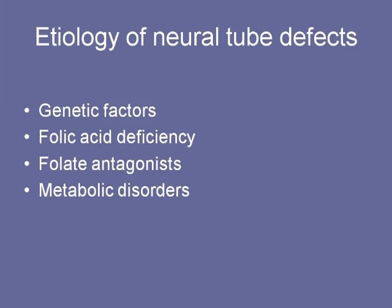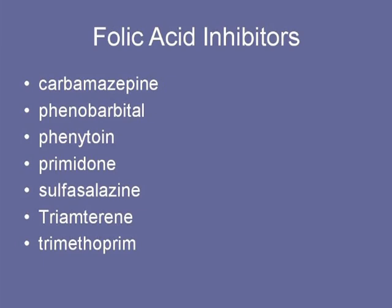What causes neural tube defects? Genetic factors — in monozygotic twins there's a high concordance rate. Folic acid deficiency in very early pregnancy is identified as a key factor, which is why obstetricians put newly pregnant patients on folate supplements. If a mother is taking folate antagonists — many anticonvulsants are folate antagonists — it can give rise to neural tube defects. Folic acid inhibitors include anticonvulsants such as Tegretol, phenobarbital, and Dilantin, as well as trimethoprim, an antibiotic not uncommon in treating urinary tract infections.